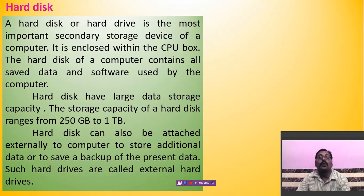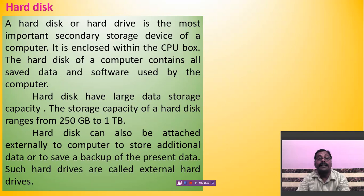The hard disk of a computer contains all saved data and software used by the computer — whatever software, operating system, and data is saved on the hard disk. The hard disk has a large data storage capacity, and its storage capacity ranges from 250 GB (gigabytes) to 1 TB (terabyte).